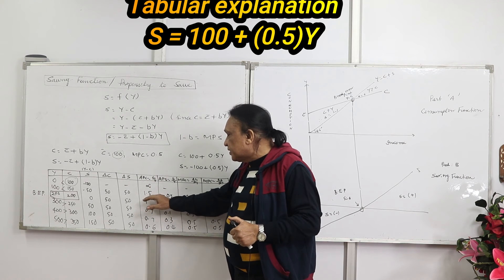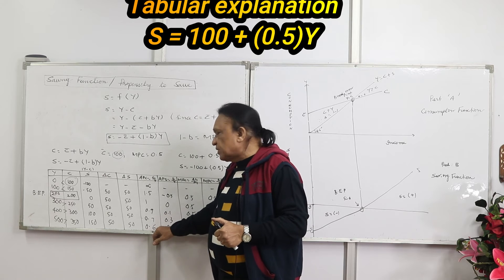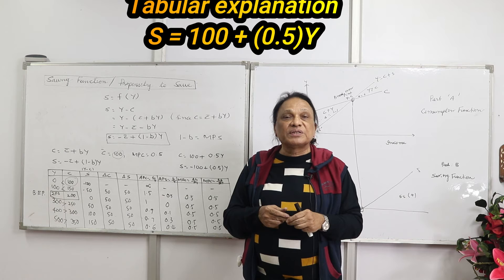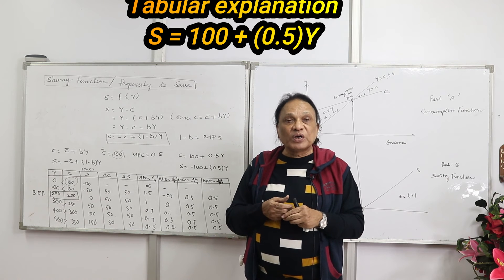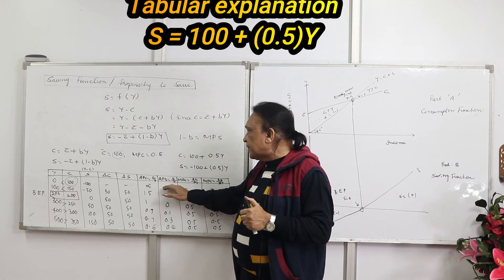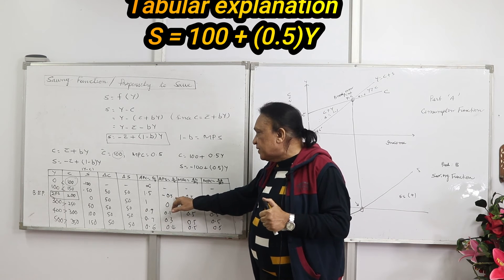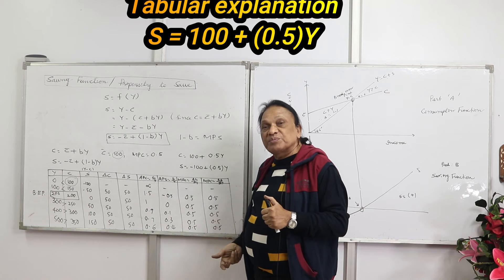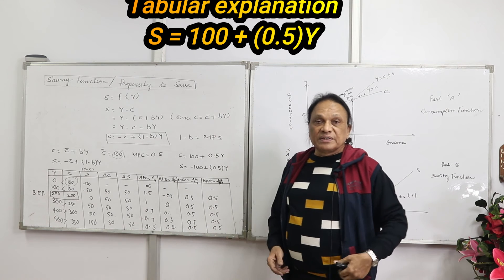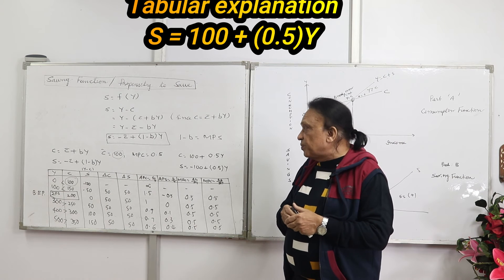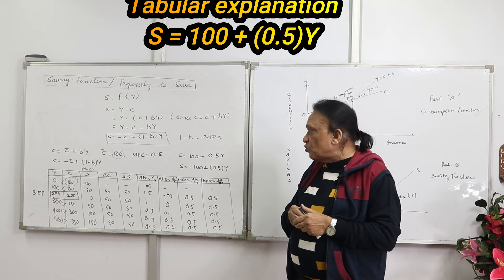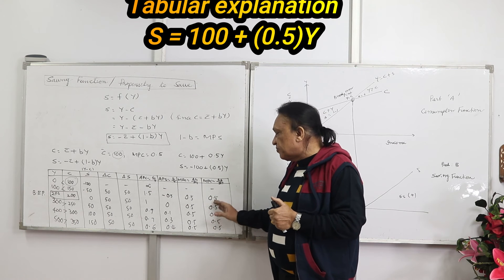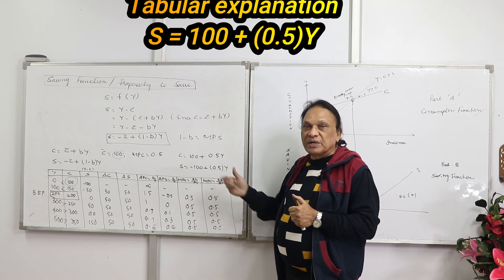APC (C/Y) is declining as income increases — values such as 1.5 down to lower numbers — indicating that consumption increases but at a lesser rate, as Keynes stated. APS (S/Y) is increasing because consumption increases at a lesser rate and savings at a faster rate. Note that APC + APS = 1. MPC and MPS are both constant at 0.5 here, as given by the equation.